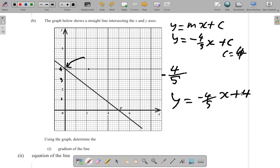The gradient is a number, which is constant. And the y-intercept is another number, which is constant. So, the equation of this line is y is equal to negative four-fifths x plus four.